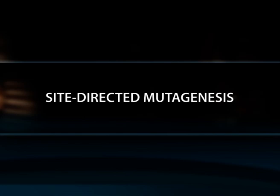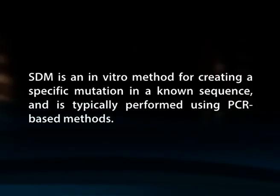Site-directed mutagenesis, or SDM, is a molecular biology method used to make specific and intentional changes to the DNA sequence of a gene and any gene products. SDM is an in vitro method for creating a specific mutation in a known sequence and is typically performed using PCR-based methods. Primers designed with mutations can introduce small sequence changes; site-directed mutagenesis by primer extension or inverse PCR can be used to achieve longer mutant regions. SDM allows researchers to investigate the impact of sequence changes or screen a variety of mutants to determine the optimal sequence.